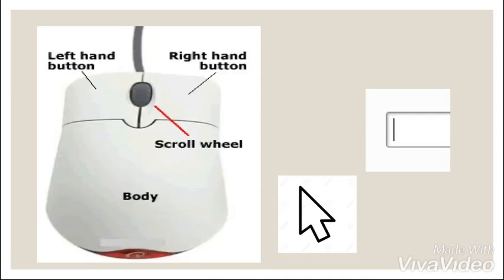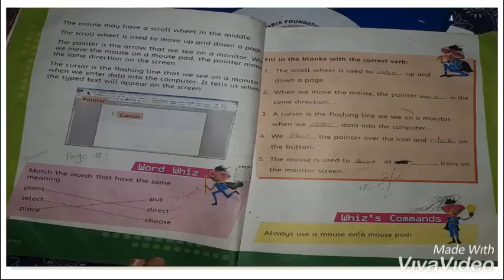Now here's a mouse. It has left button, right button, and in the middle it has scroll wheel. The arrow shown here is called pointer, and the straight line shown is called cursor. Scroll wheel is used to move page up and down. Pointer is used to point at things, and the cursor is the flashing line we use in documents.